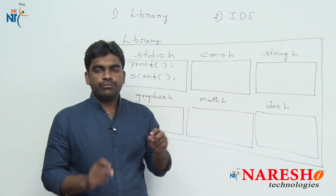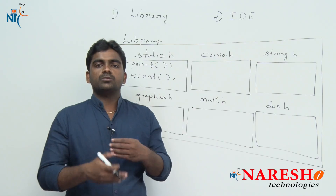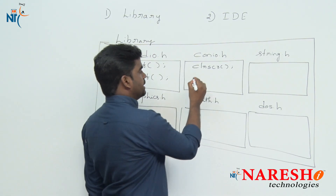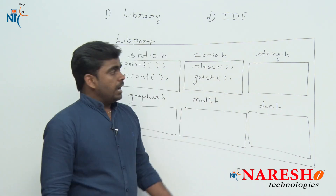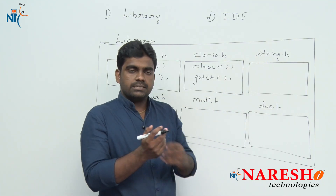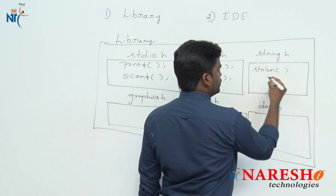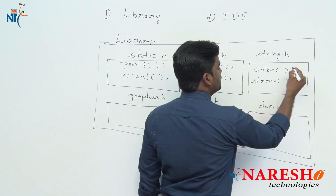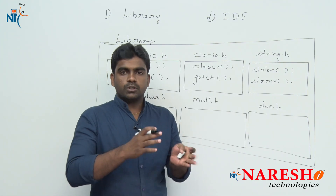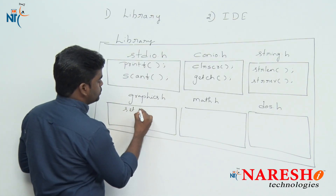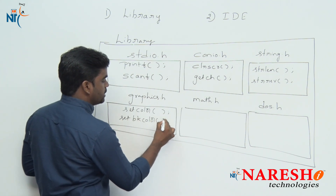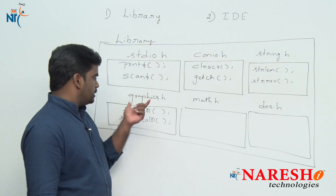conio.h contains console-related functions. If you want to clear the console — meaning clearing the output screen — a clear screen function is available. If you want to read a character from the console, the getch function is available. For string manipulation in string.h, strlen finds the length of a string, and strrev reverses all characters in the string. In graphics.h, C programming allows graphical programming and even simple 2D games. Functions like set color and set background color — setbkcolor — are among the hundreds of methods available in graphics.h.